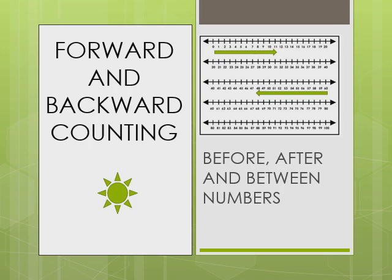But when we count in the reverse direction, 10, 9, 8, 7, we are going backward. Hence, it is called backward counting.